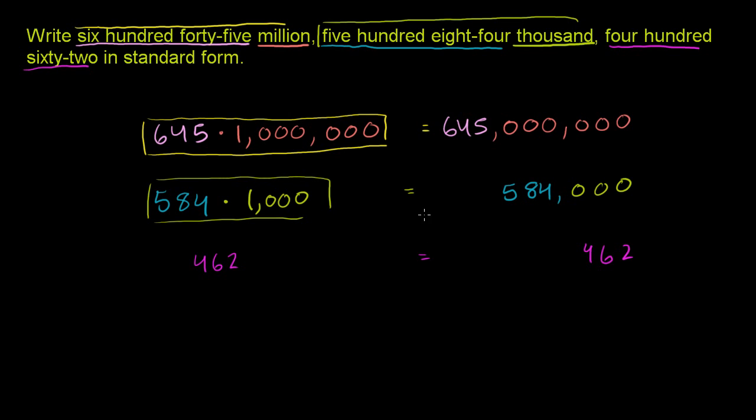Now our number is all of these combined. It is 645,584,462. So one way to think about it is that you could add these three numbers. So if we were to add them, we get 645,584,462.